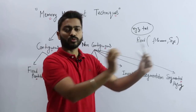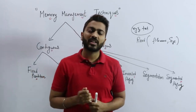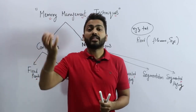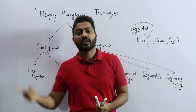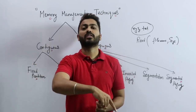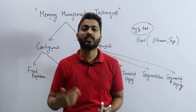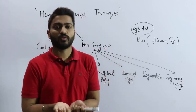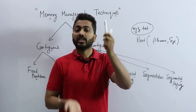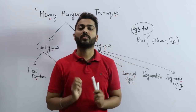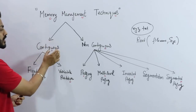When the CPU sends a process for I/O execution, that process leaves the CPU's range and the CPU becomes idle. That is why we keep the degree of multiprogramming high — so that whenever the CPU is about to be idle, we can immediately allot another process from the ready state. The more processes available in the ready state, the more we can utilize the CPU. To achieve this, we must properly utilize RAM — that is, primary memory.